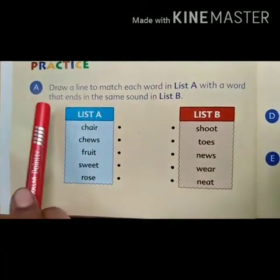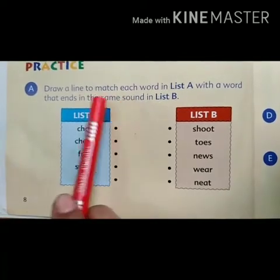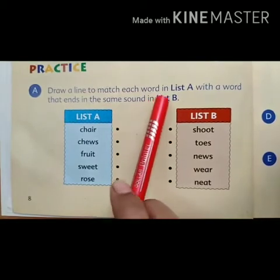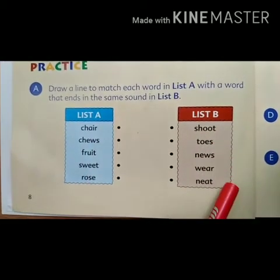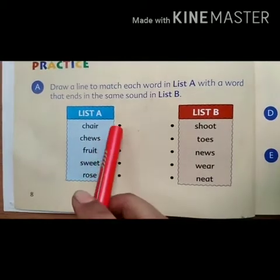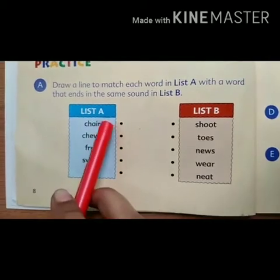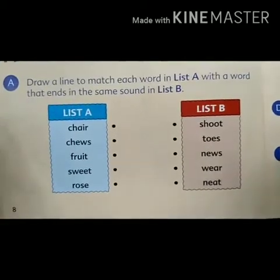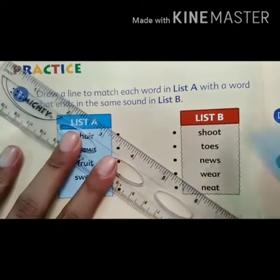उस लफ्ज़ के साथ जो खत्म होता है, in the same sound — मिलते जुलते साउंड से — in list B. For example, chair. अब मुझे इस list B के ऐसे वर्ड से मैच करना है कि इन दोनों का sound same हो. Chair — shoot, no. Chair — toes, no. Chair — news, no. Chair — wear, yes. तो अब हम इसे मैच करेंगे: chair, wear.